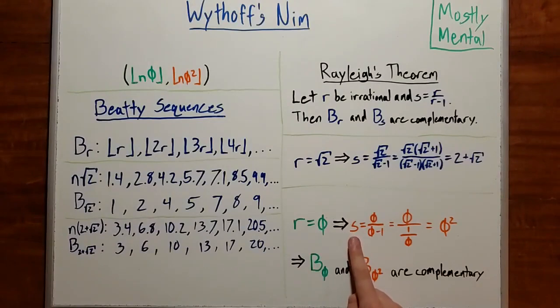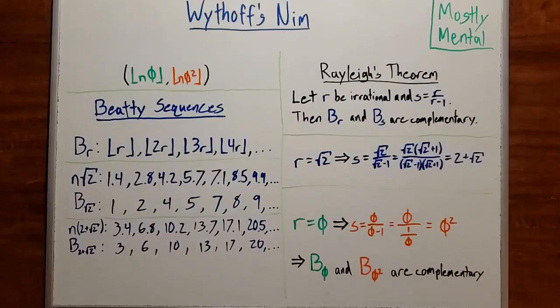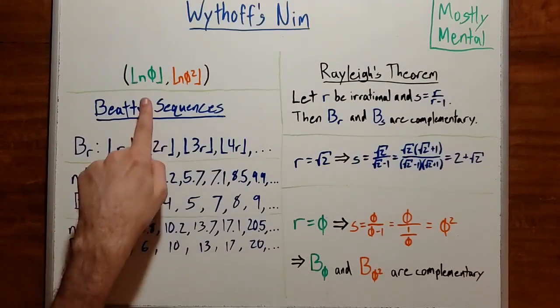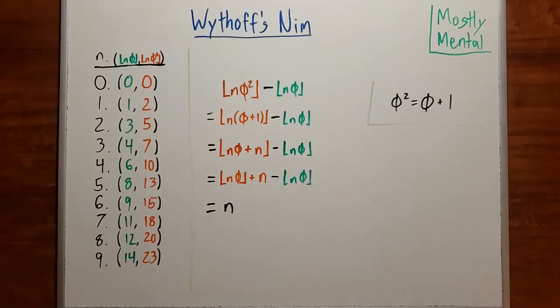Conveniently for us, if r is phi, then s comes out to phi squared, which means that our coordinates here are two complementary Beatty sequences. So every positive integer appears in exactly one of these two sequences. And remember, we have two lines, one for each order of the coordinates, and also those zeros we set aside earlier. So each whole number appears exactly once as an x coordinate, and once as a y coordinate. Actually, as we just described it, any two complementary Beatty sequences would give us every whole number. But the golden ratio in particular gives us one additional nice feature.